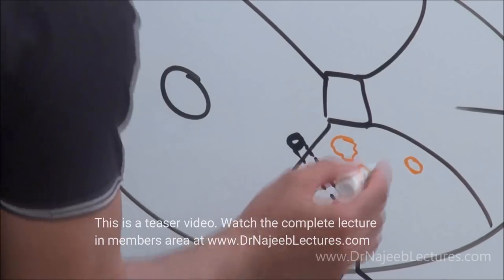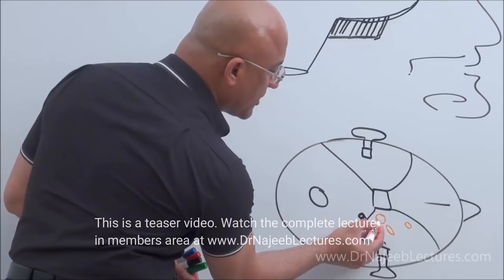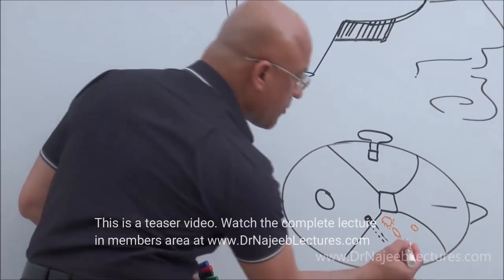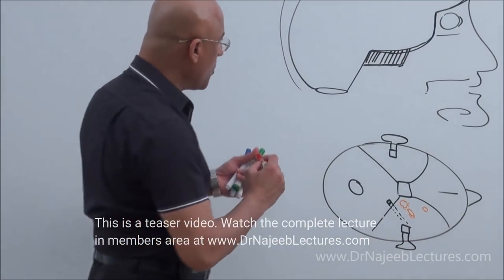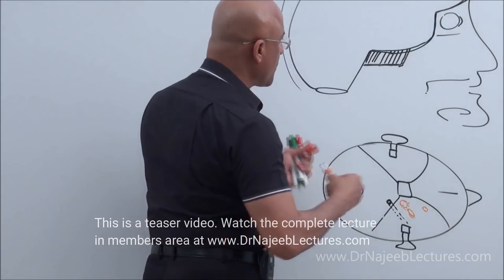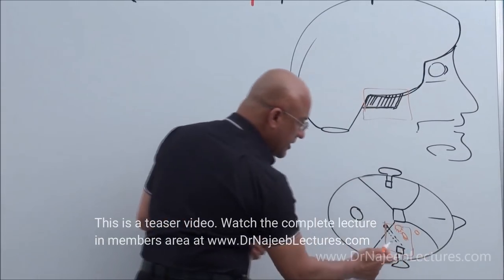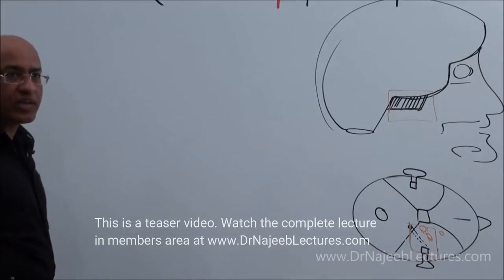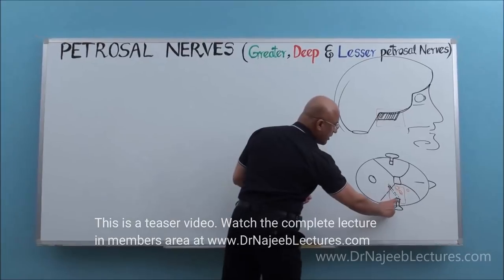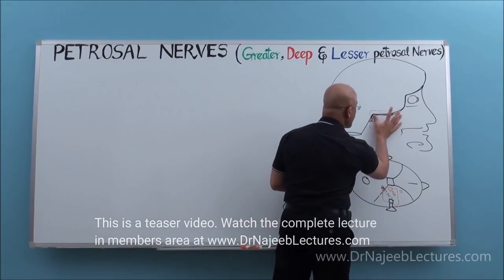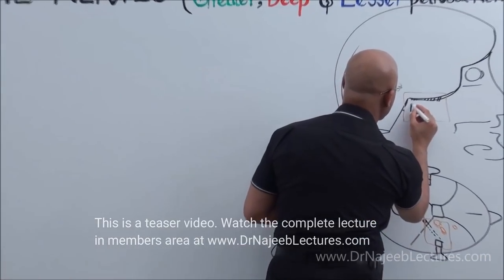For today's lecture, foramen lacerum and foramen ovale are important. I'm going to draw a magnification of this area. First I will draw the ear — the middle ear cavity — shown like this. This is the anterior wall, this is the posterior wall, this is the medial wall with the promontory, and this is the floor.